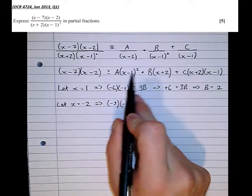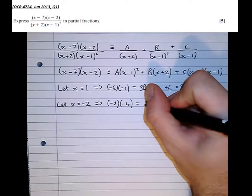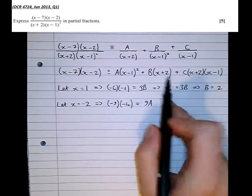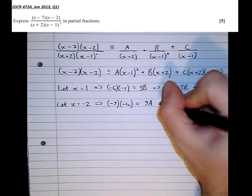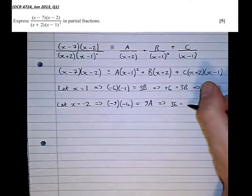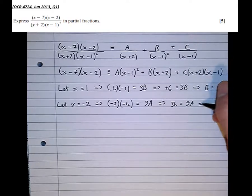Equals, so minus 2 minus 1 is minus 3, minus 3 squared, which is 9. Minus 2 makes that disappear. Which means that 36 equals 9a, which means that a equals 36 over 9, which is 4.